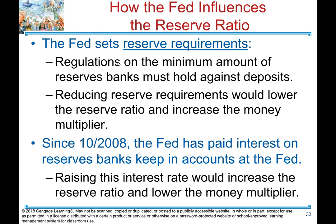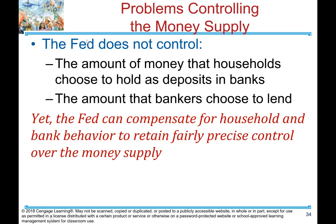How the Fed influences the reserve ratio. The Fed sets reserve requirements — regulations on the minimum amount of reserves banks must hold against deposits. Reducing reserve requirements lowers the reserve ratio and increases the money multiplier. Since October 2008, the Fed has paid interest on reserves banks keep in accounts at the Fed. Raising this interest rate would increase the reserve ratio and lower the money multiplier. Although the Fed does not directly control the amount households deposit or the amount banks choose to lend, it can compensate for household and bank behavior to retain fairly precise control over the money supply.